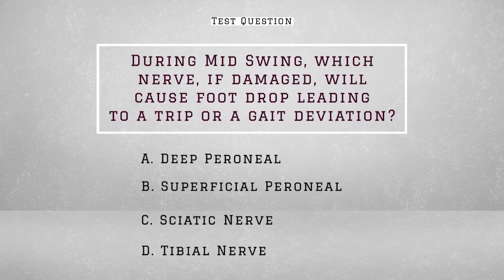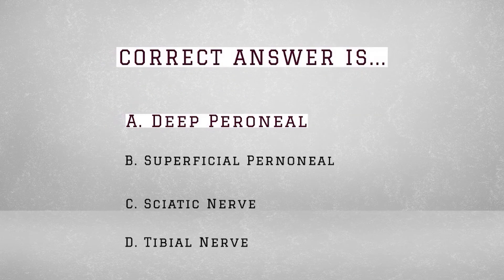Test question: During mid swing, which nerve, if damaged, will cause foot drop leading to a trip or gait deviation? A) Deep peroneal, B) Superficial peroneal, C) Sciatic nerve, D) Tibial nerve. The answer is A. The anterior tibialis is innervated by the deep peroneal nerve.